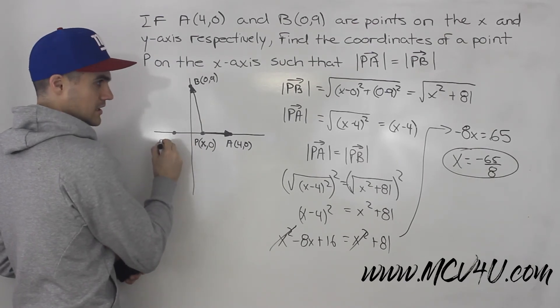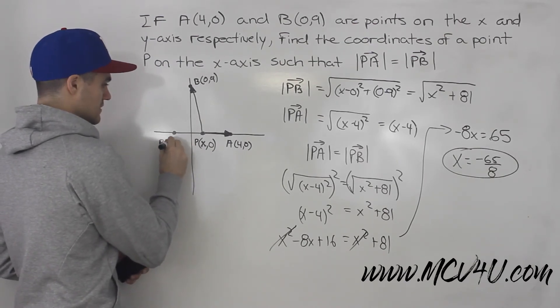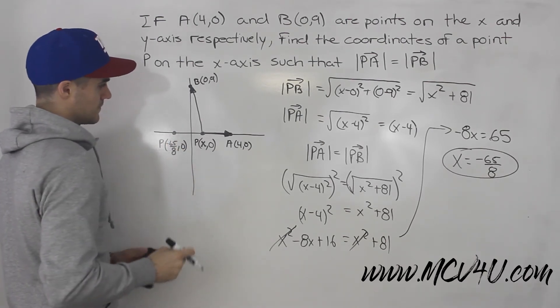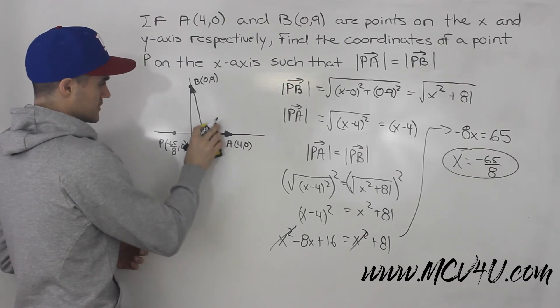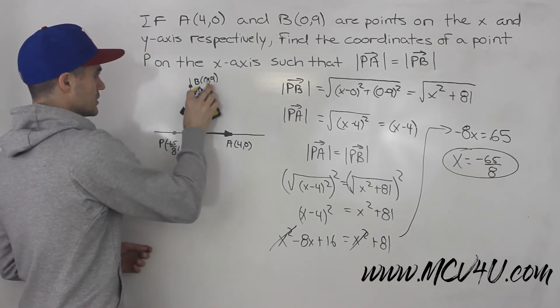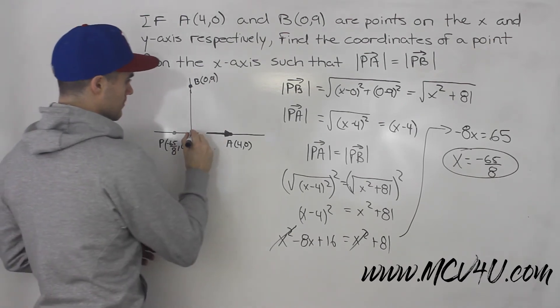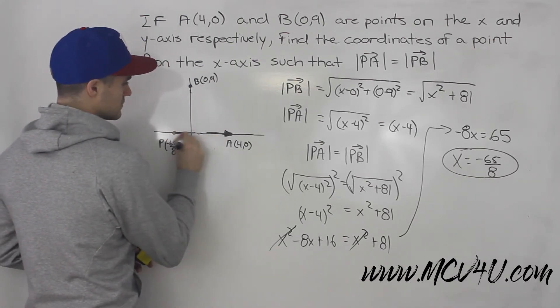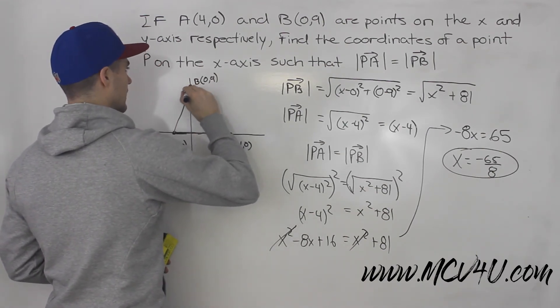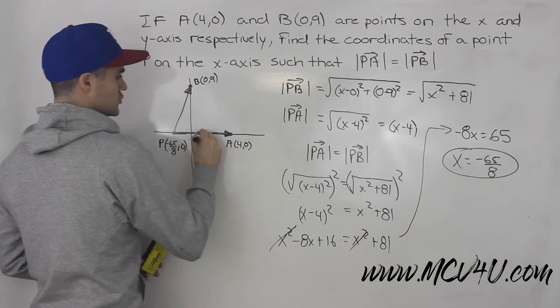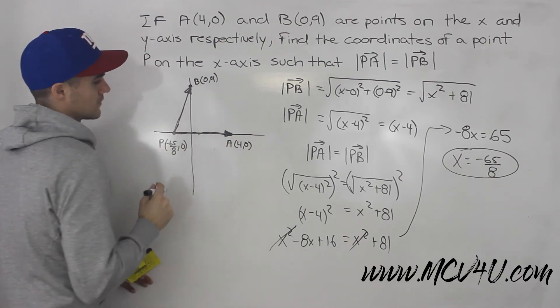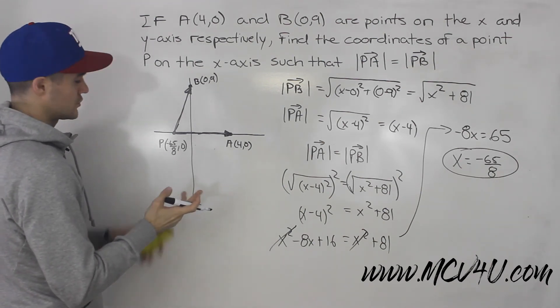So this point P is going to be (-65/8, 0). And that actually, even though this graph is not fully to scale, that actually looks a lot better, because then the magnitudes are going to be somewhat closer in length at least. When we drew it from there, we can tell that the magnitudes were not equal for sure. But at this point, they look a little bit more equal in magnitude.